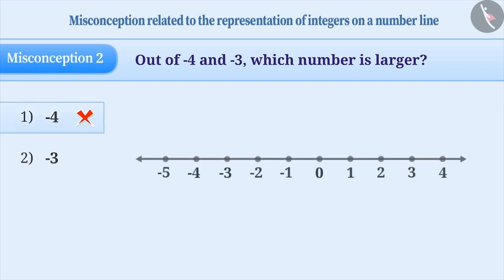We know that on the number line, if a number is to the right of another number, then it is a larger number. Therefore, minus 3 is larger than minus 4. So, the correct answer is option 2.